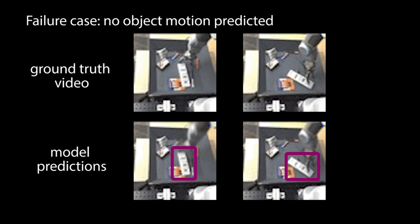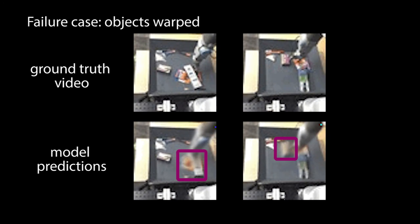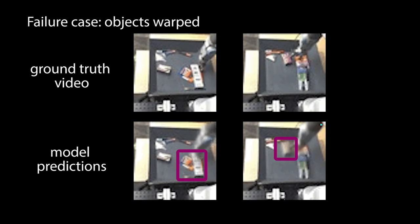Sometimes no object motion is predicted. Because there are hundreds of objects with different heights, predicting whether or not an object will move from monocular images is challenging. In some cases, the model predicts that some of the object pixels will move, but inaccurately predicts the motion of the rest of the object.